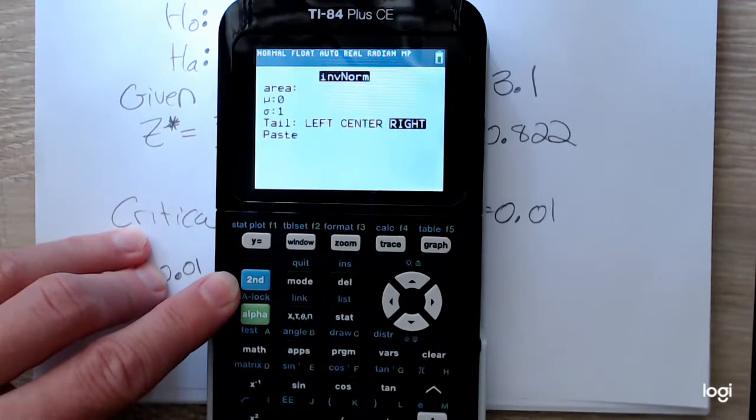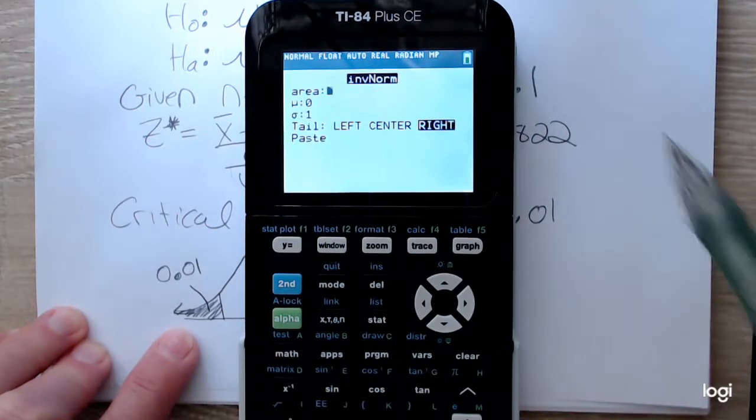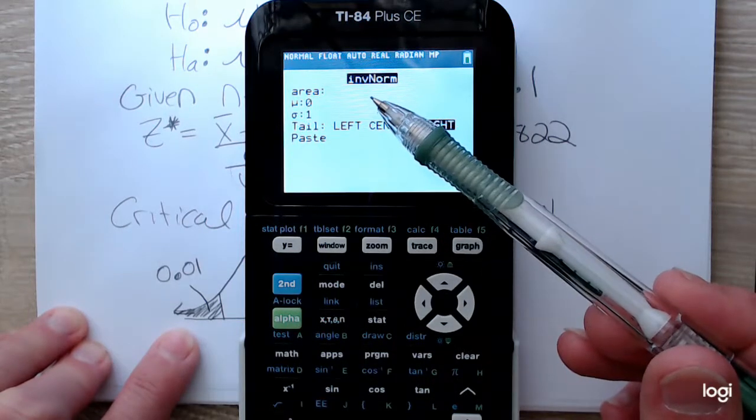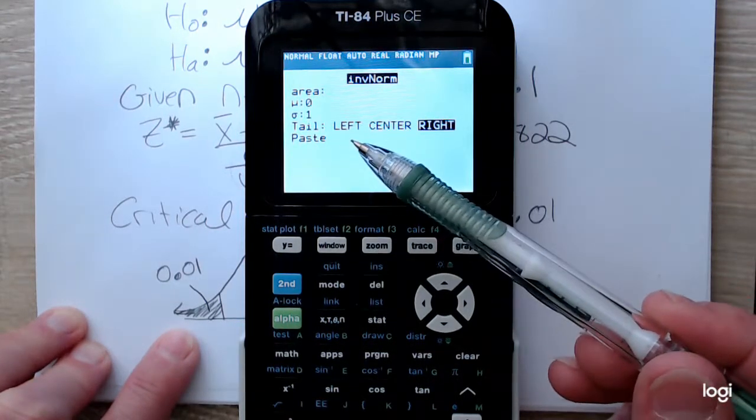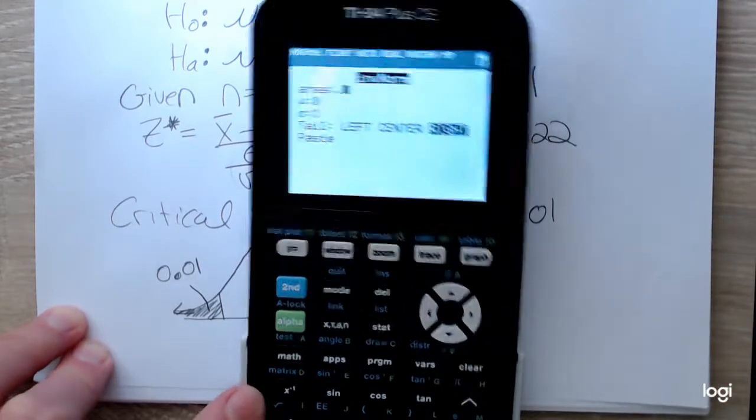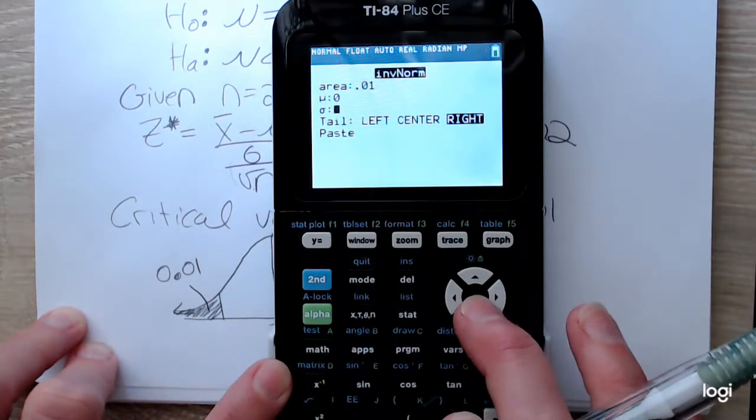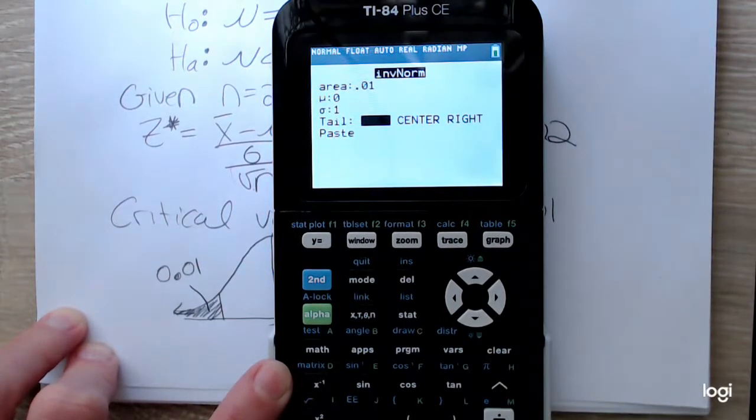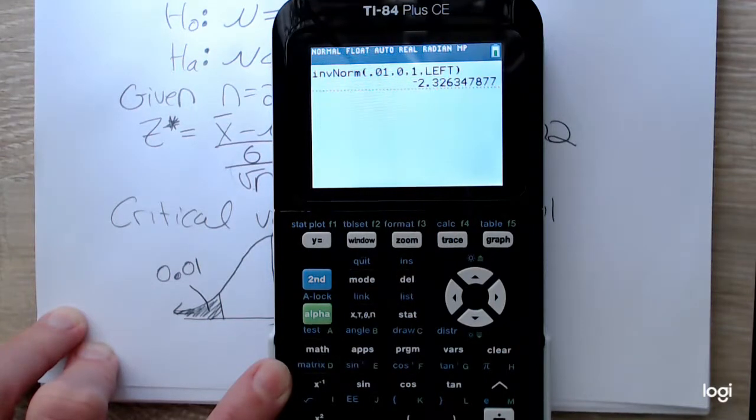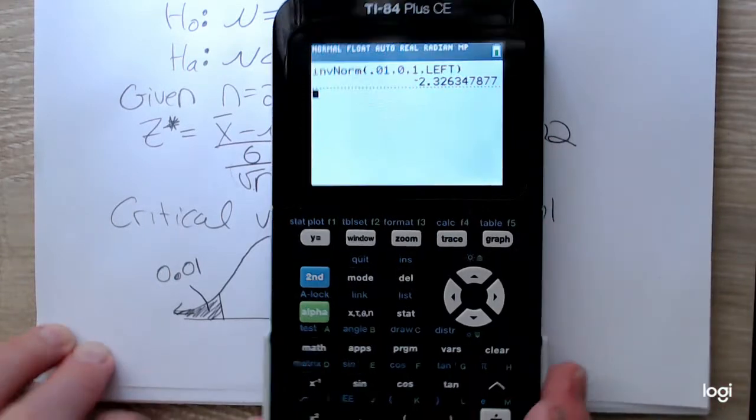Going to the distribution menu, selecting inverse normal. My cumulative area, remember the older TI-84s read an area that's cumulative. A newer TI-84, you can indicate what tail area you are looking for. So I'm going to switch that to left. And I get a critical value of negative 2.326.